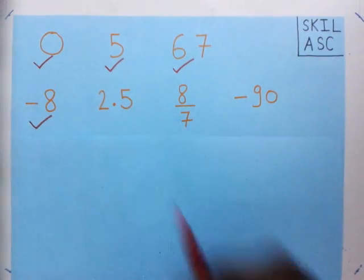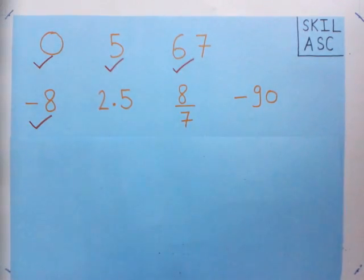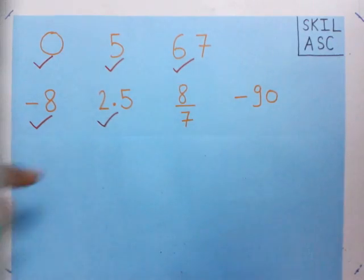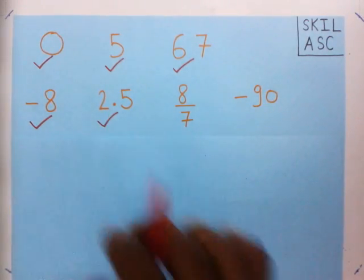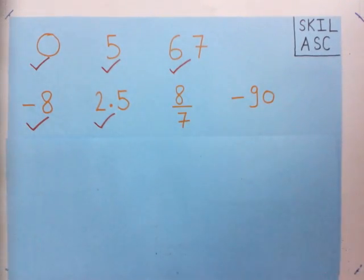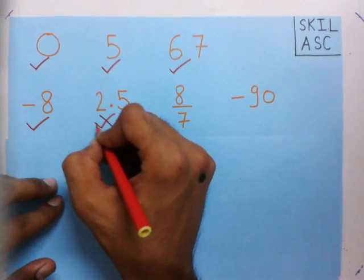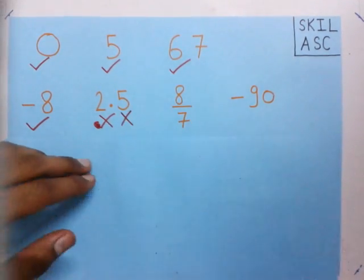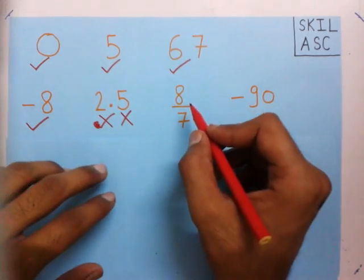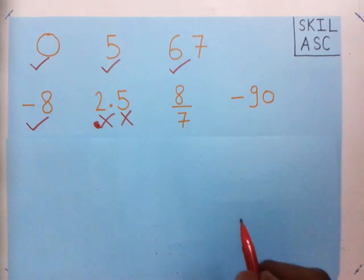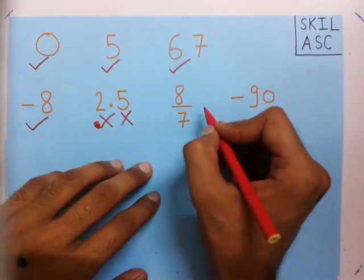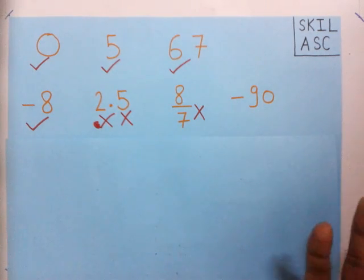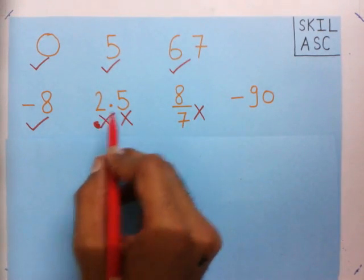Now you see 2.5. You can see that there is a decimal point in this number, and numbers with a decimal point are not integers. So 2.5 is not an integer. The next number is 8 by 7. This number is not included in integers — you don't use it while counting. You don't say 8 by 7 while counting, and we also don't use 2.5 while counting. We say 1, 2, 3 — not 2.5. So these two numbers are not integers.